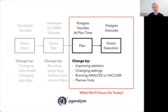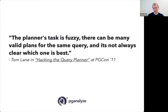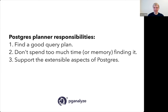Today we're really focused on those last aspects. With the same query text, what can we do so that Postgres picks a better plan? It's always important to understand the systems you're working with. The Postgres planner is somewhat complicated but also in a sense simple. This is from a good presentation by Tom Lane about 12 years ago at pgcon in 2011 where he talked about hacking the query planner. He stated that the planner's task is fuzzy — there are many valid plans for the same query and it's not always clear which one is best.